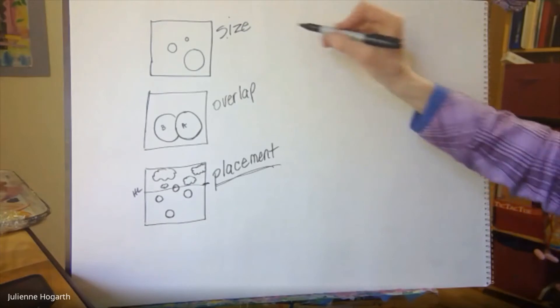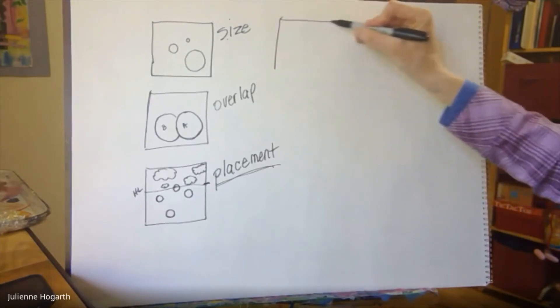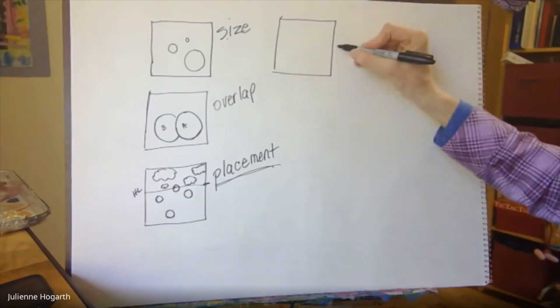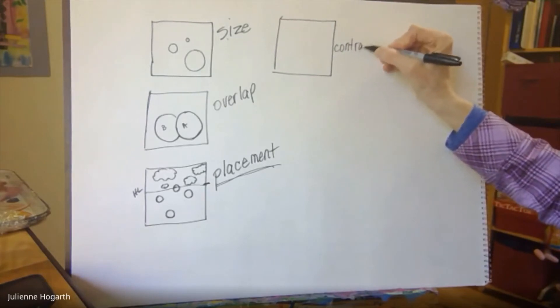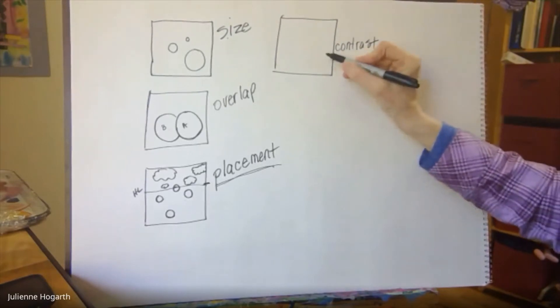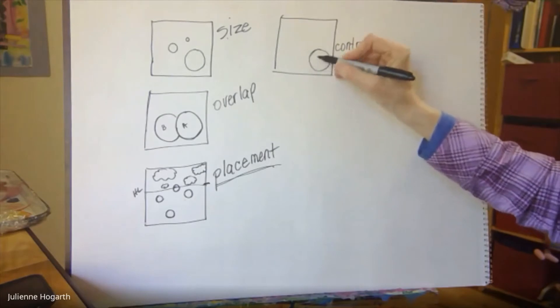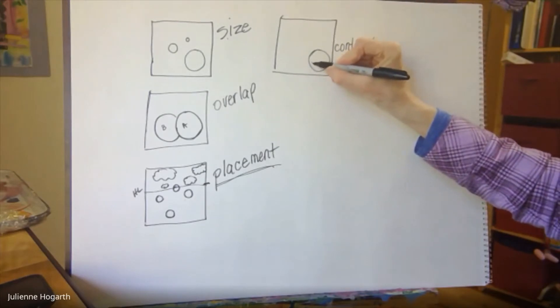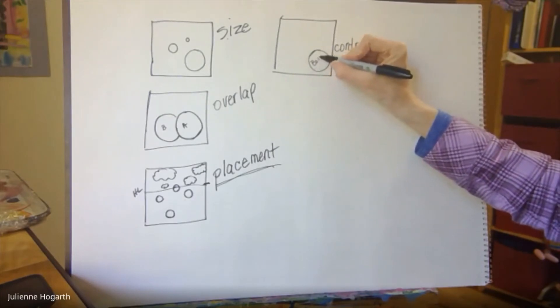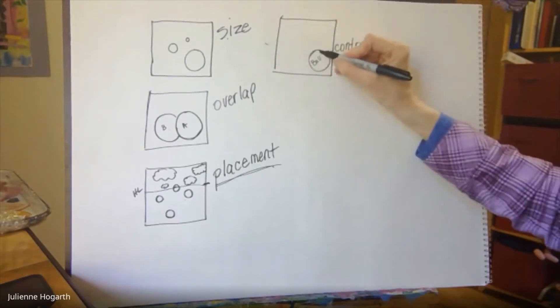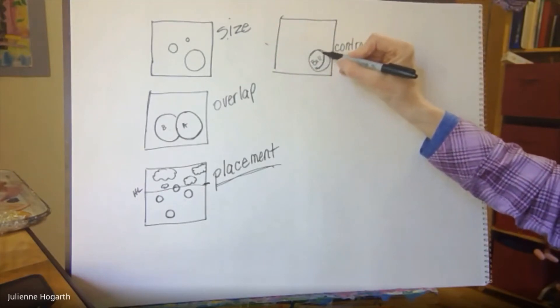Let's see the next one is contrast. So let's draw another square. Contrast. Now up close I see that this is a ball. And the light's coming from here. That's the brand. It's made by a ball right.